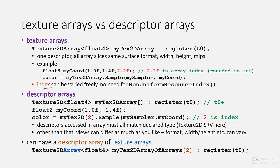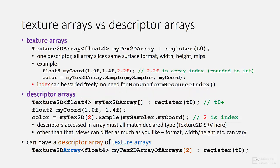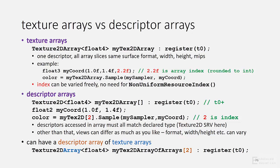The index value in a texture array can vary freely without any need for qualifiers like the non-uniform resource index attribute, which is actually required with descriptor arrays when their index varies within a draw or dispatch. Going from texture arrays to descriptor arrays, the array index moves out of the coordinate to the brackets after the resource. With descriptor arrays you get more flexibility: while the view type must be consistent across all descriptors, everything else can vary per descriptor — format, width, height, and number of MIPs. Descriptor arrays and texture arrays are actually orthogonal features; you can have a descriptor array of texture arrays.